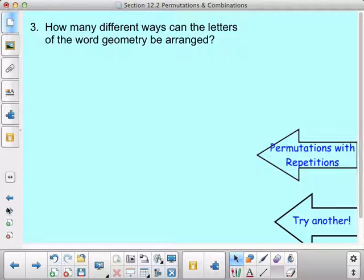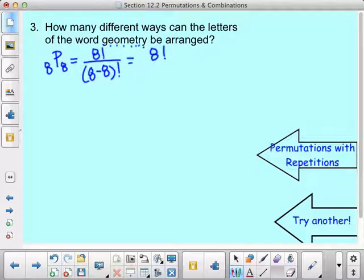Example 3, how many different ways can the letters of the word geometry be arranged? So in this case, there are 8 different letters, and I'm arranging them in 8 ways. So 8P8. Eight letters arranged eight ways. So it would be 8 factorial all over 8 minus 8 factorial. So I have 8 factorial over 0 factorial. And I told you earlier that 0 factorial is 1. So it's really 8 factorial over 1, so 8 factorial. And this is where finding that factorial key on your calculator would be helpful, because you can just type 8 and then factorial. And when you do that, you get 40,320.